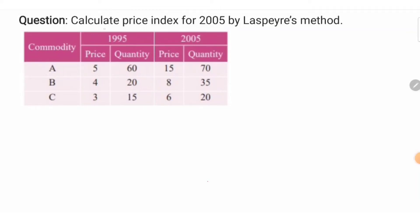Hello, in this video we need to calculate the price index for 2005 by Laspeyres method. So the formula for the Laspeyres method of the price index is LA equals to sum of P1 Q0 divided by sum of P0 Q0.